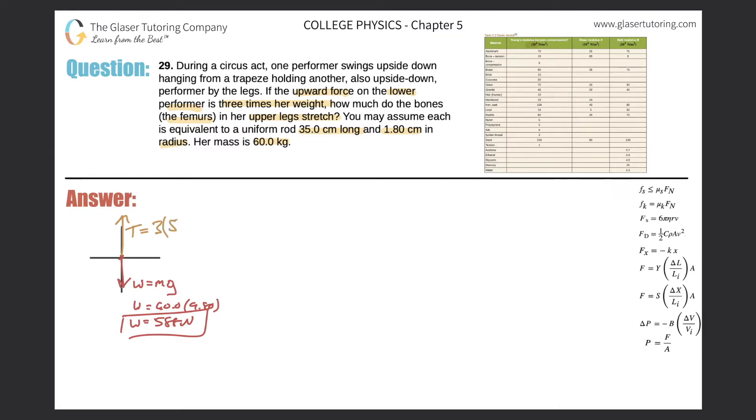It's important just to kind of give us some context for this problem. So really what they're saying is that the tensional force in the lower performer's femurs is going to be three times her weight. So her weight was 588. So simply plug that in and let's just find the tension now. So this is going to be three times 588. So 1760. So we got 1760 newtons.